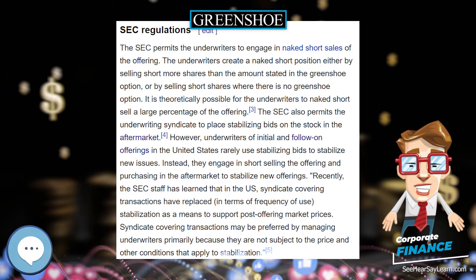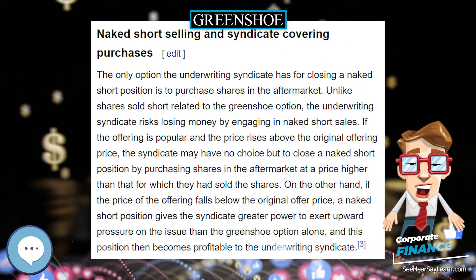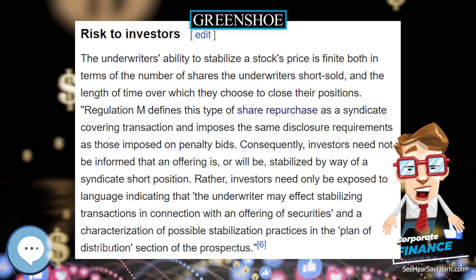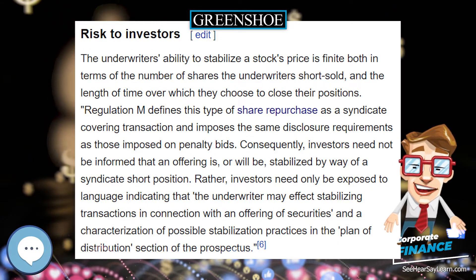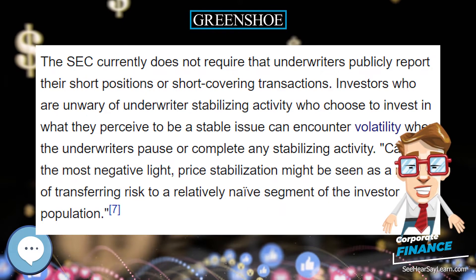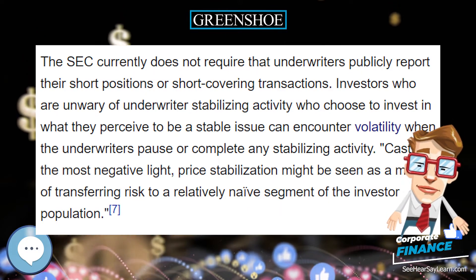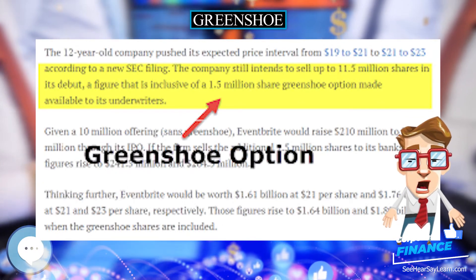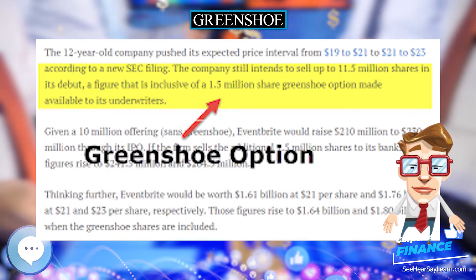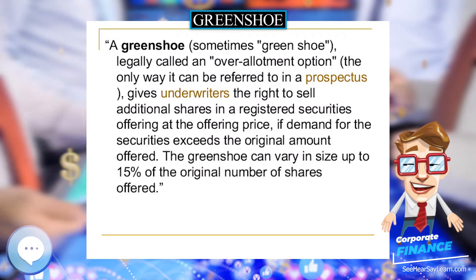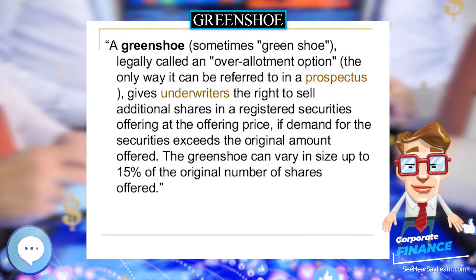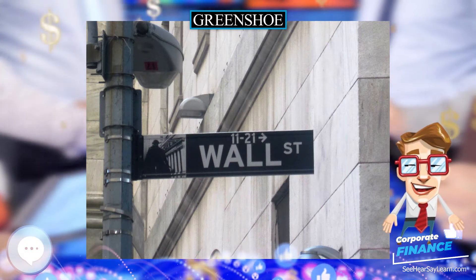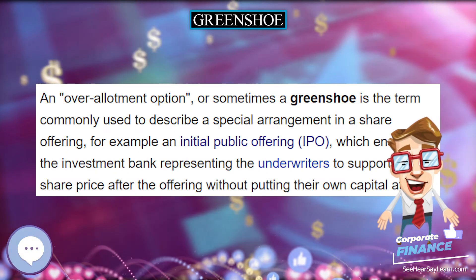This is where the green shoe over-allotment option comes into play. The company had initially granted the underwriters the option to purchase up to 15% more shares than the original offering size at the original offering price. By exercising their green shoe option, the underwriters are able to close their short position by purchasing shares at the same price at which they short sold them, so the underwriters do not lose money.